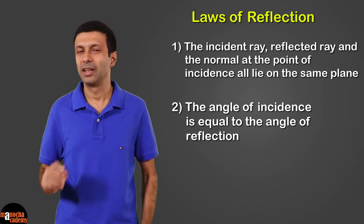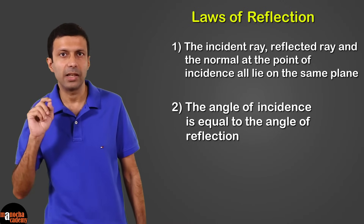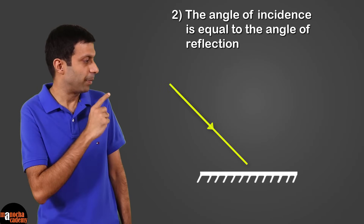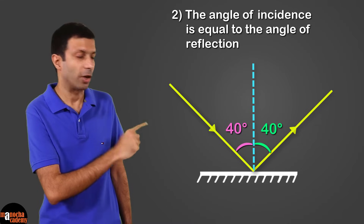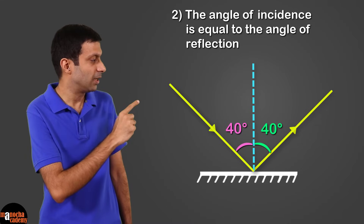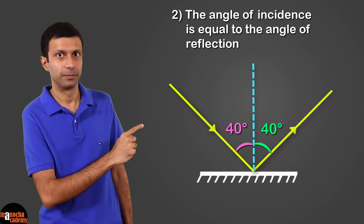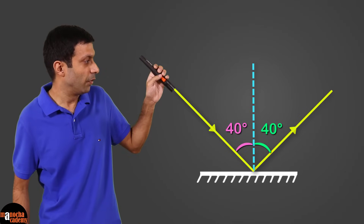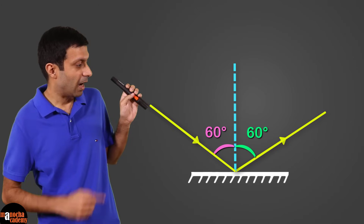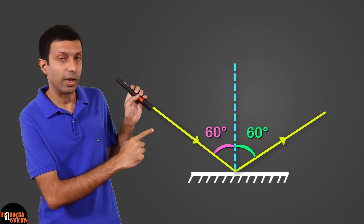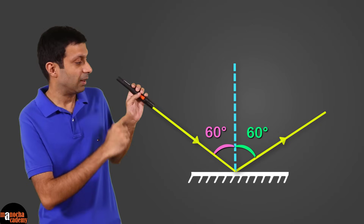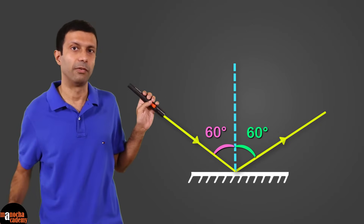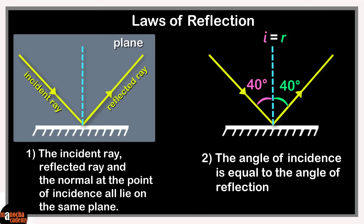The second law of reflection is much easier — it states that the angle of incidence is equal to the angle of reflection. As you can see in the picture, the angle of incidence is 40 degrees and so is the angle of reflection. If I change the angle of incidence by moving this torch, you can see the angle of reflection also changes, so that the angle of incidence is always equal to the angle of reflection. Let's place the two laws of reflection on our concept board.